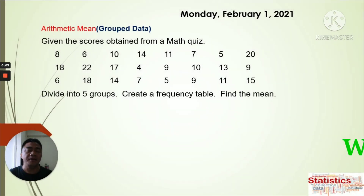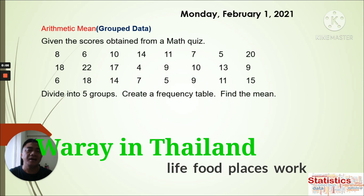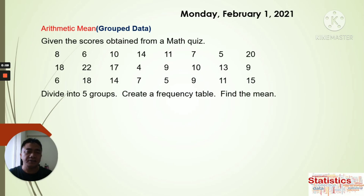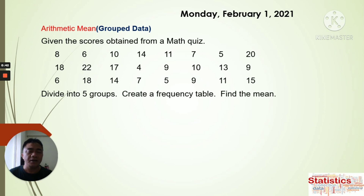Hello again, good morning, dear Math 5 students. Today is the first of February, Monday, the first day of the second month of 2021. Last week we started about finding the arithmetic mean for grouped data. We just group the raw scores and find the arithmetic mean, and we have more examples for you to understand this lesson.